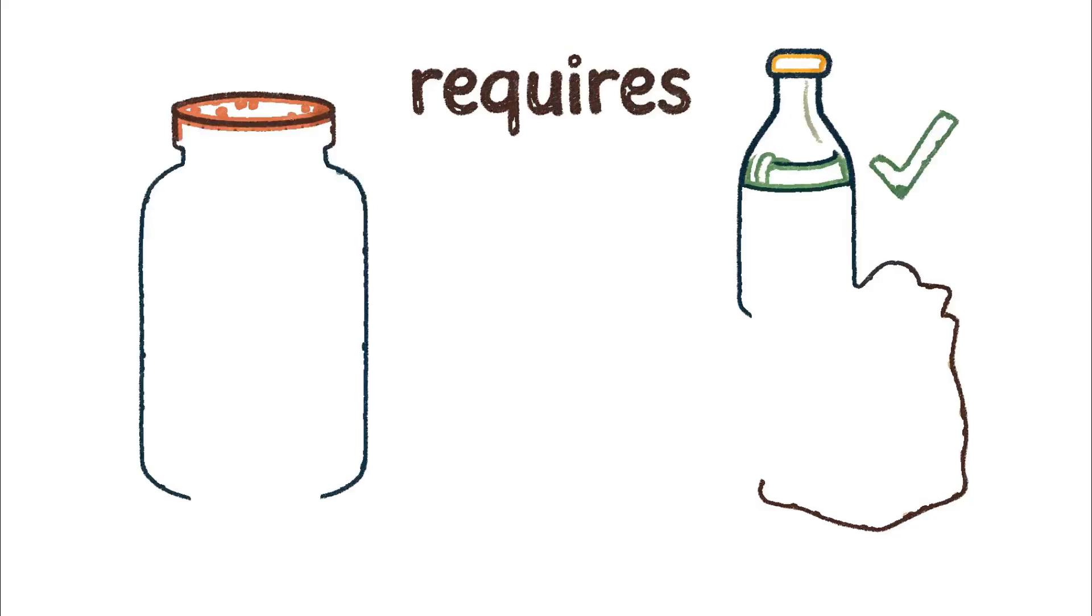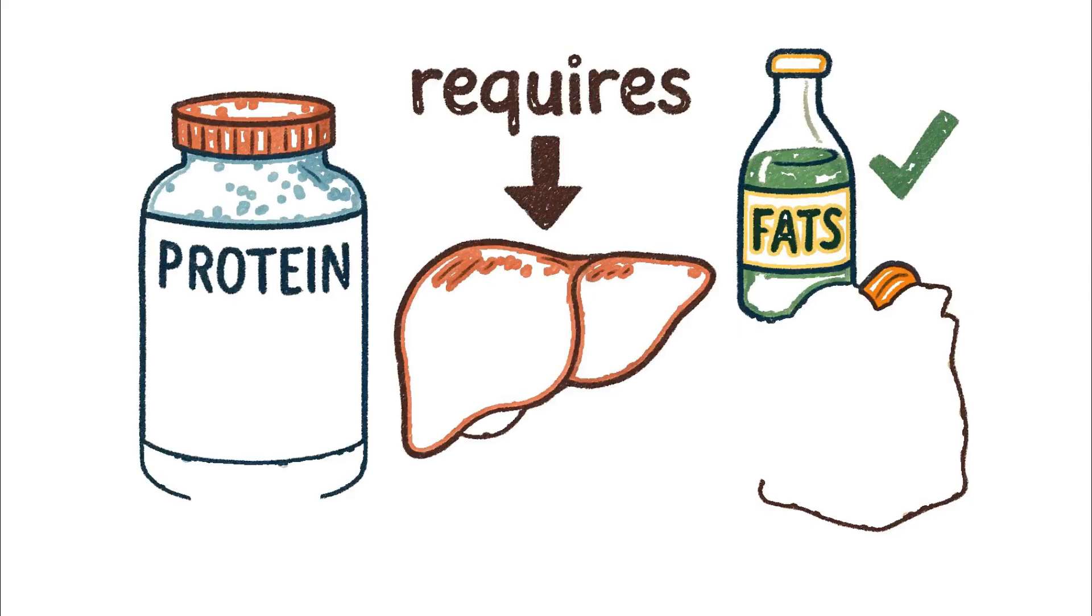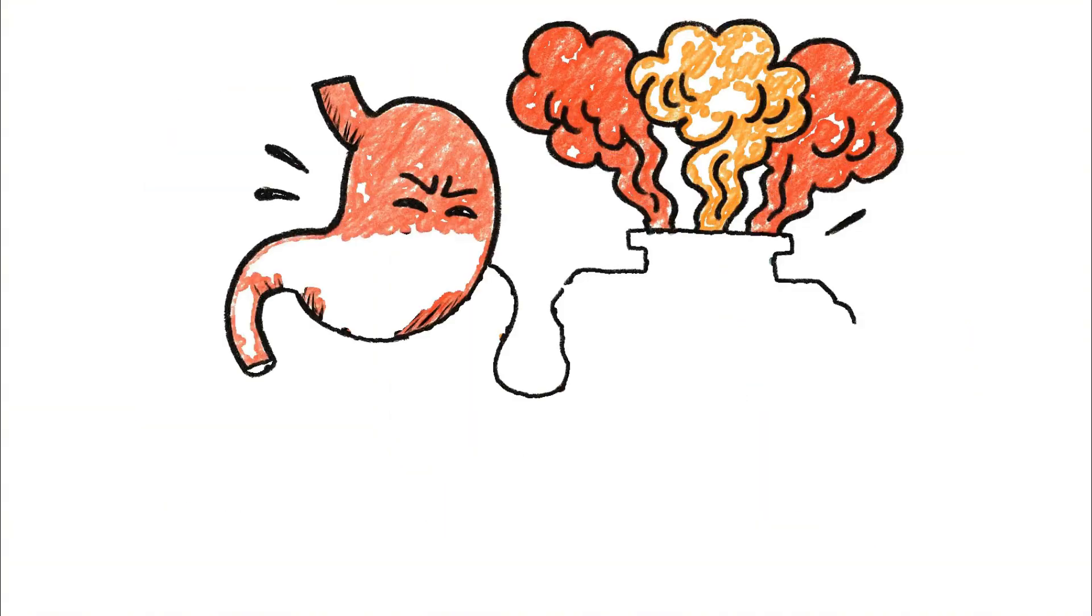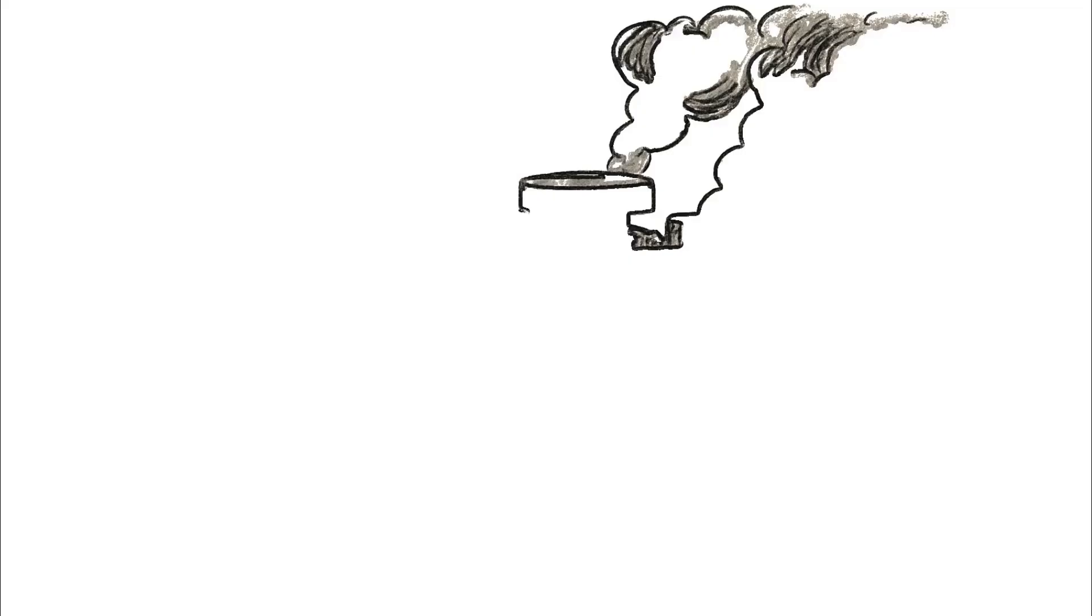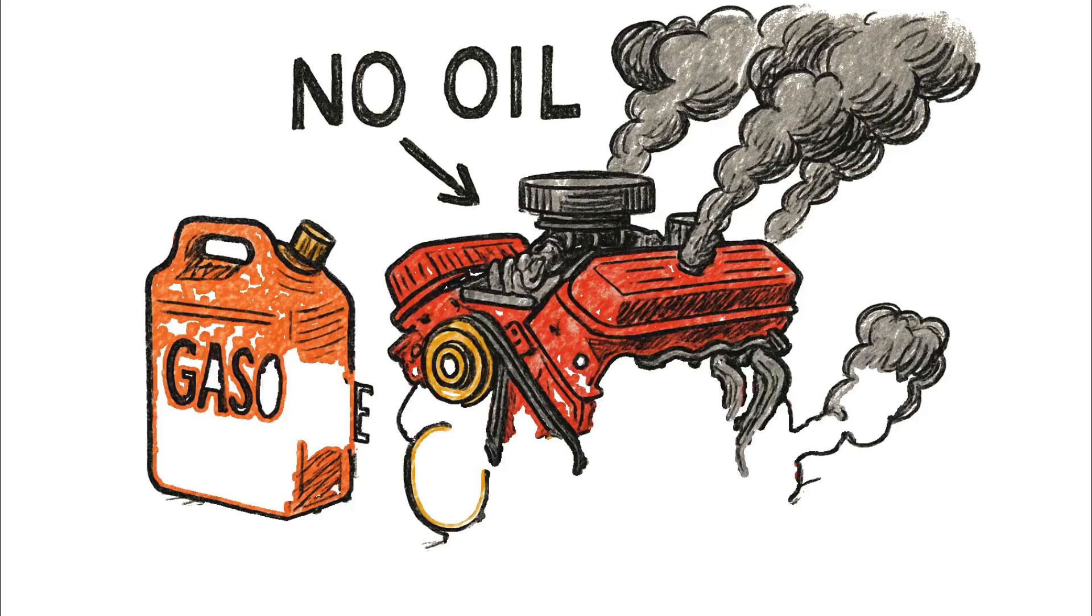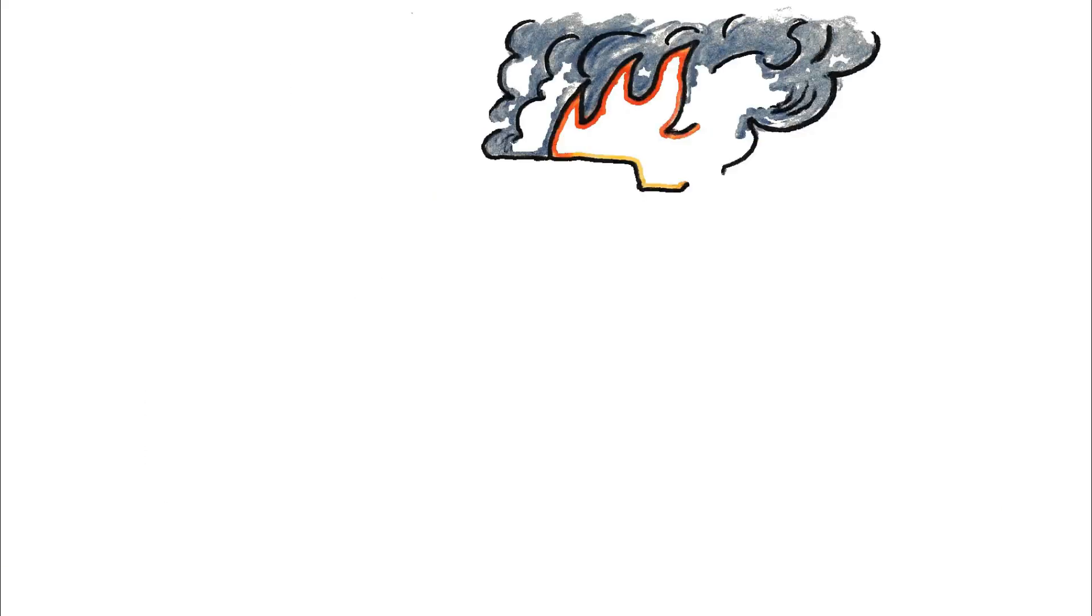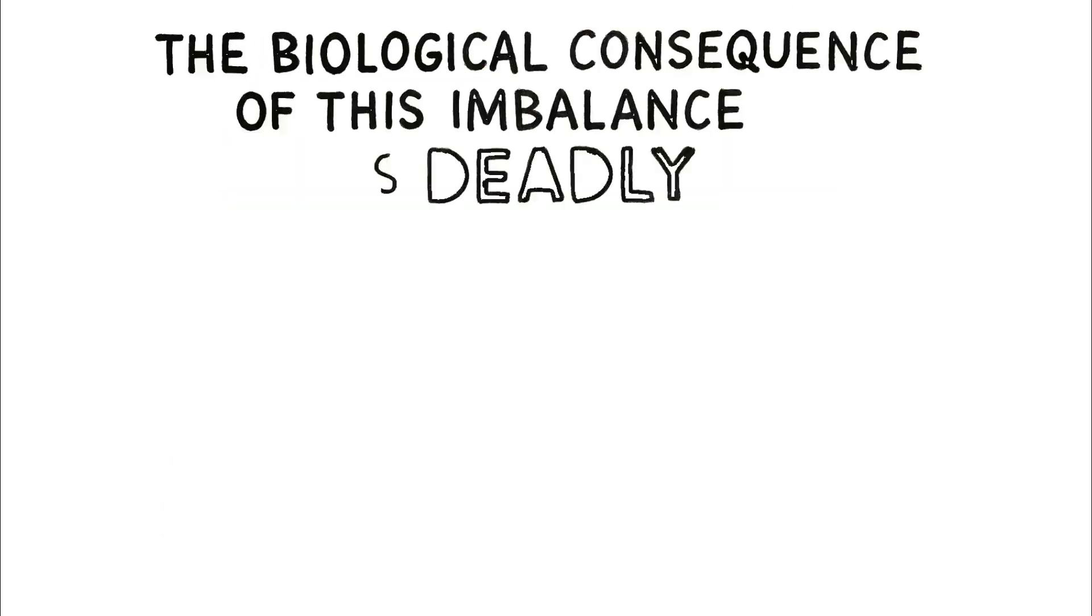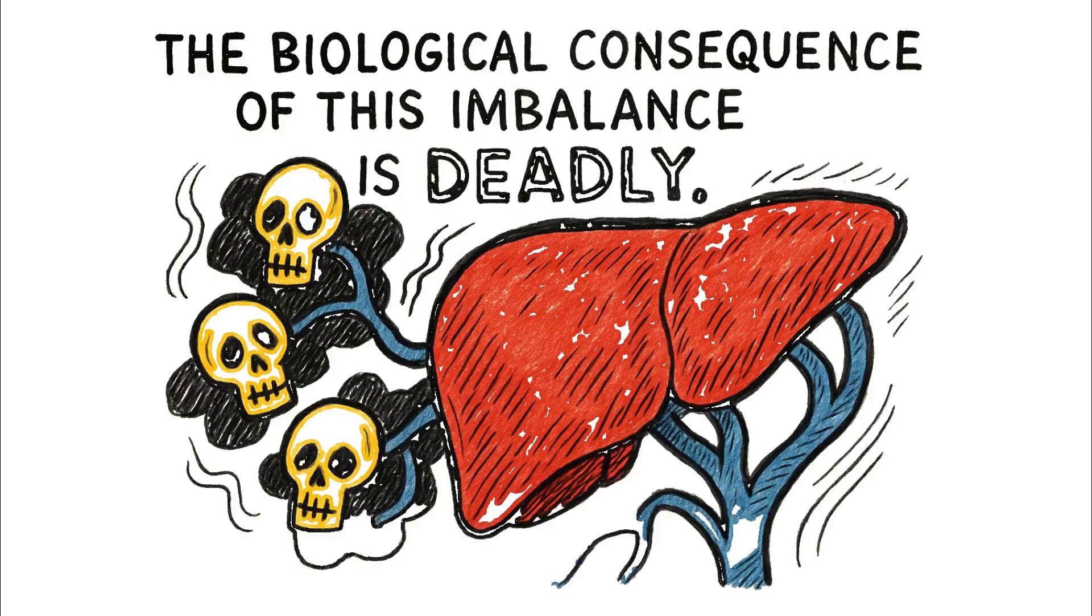To properly process the amino acids and protein for energy, it absolutely requires the presence of fats or carbohydrates. Without them, the system gets overloaded. Think of trying to run a high-performance engine with only gasoline but no oil. It will seize up and destroy itself. That's precisely what happens inside the body. The biological consequence of this imbalance is deadly.